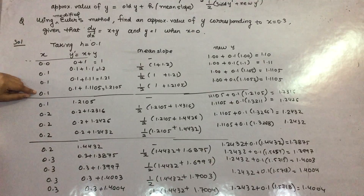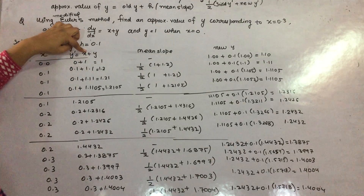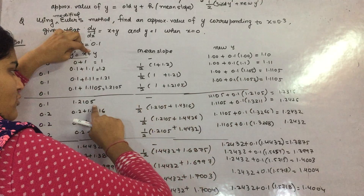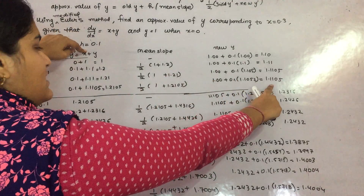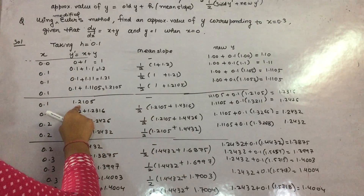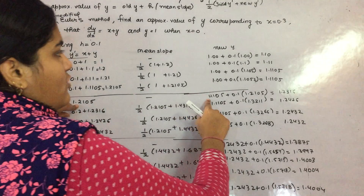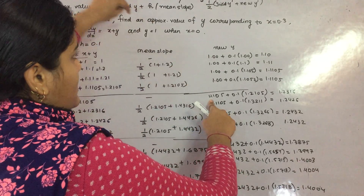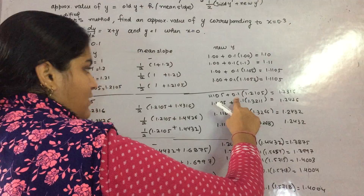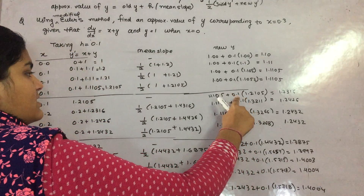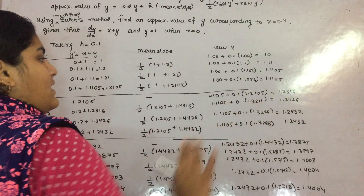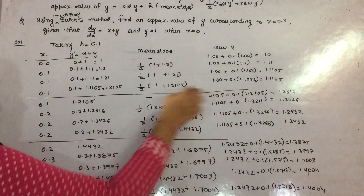Now change the interval. Your x is 0.1, your y is now 1.1105, and y-dash equals x plus y, so y-dash equals 0.1 plus 1.1105, which is 1.2105. The first value of mean slope is the same as y-dash, which is 1.2105. So the new y becomes old y 1.1105 plus h 0.1 multiplied by mean slope 1.2105.